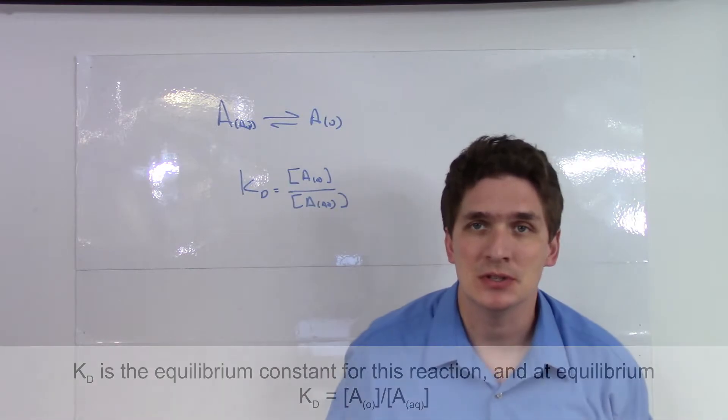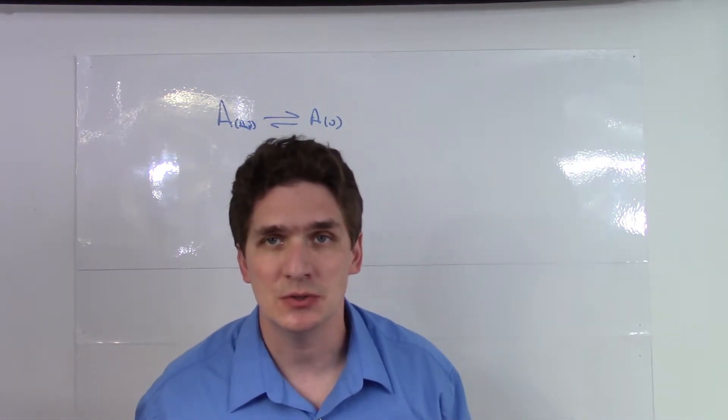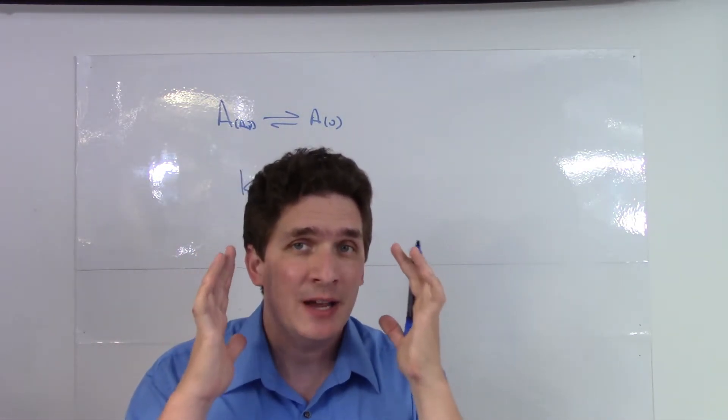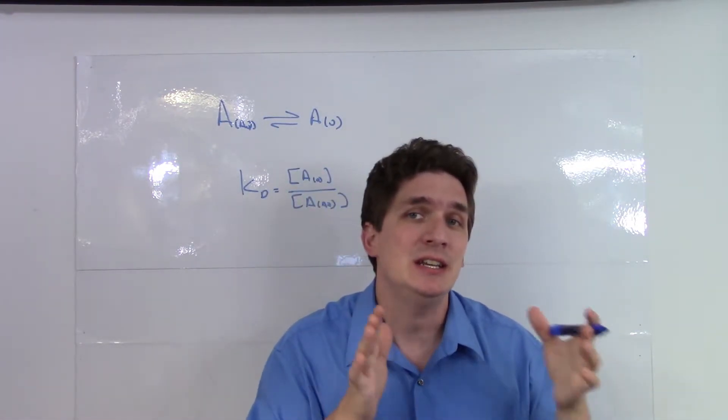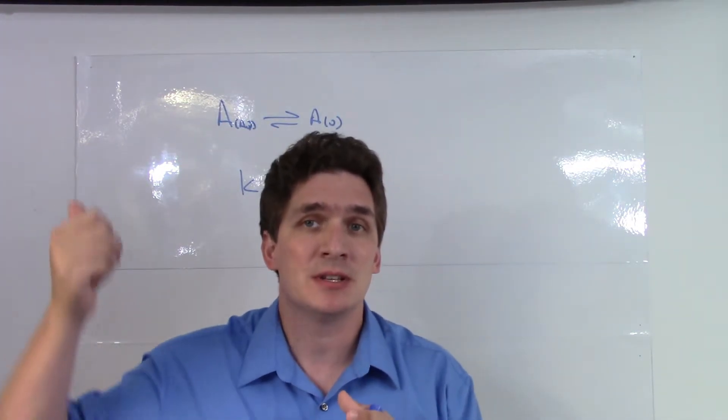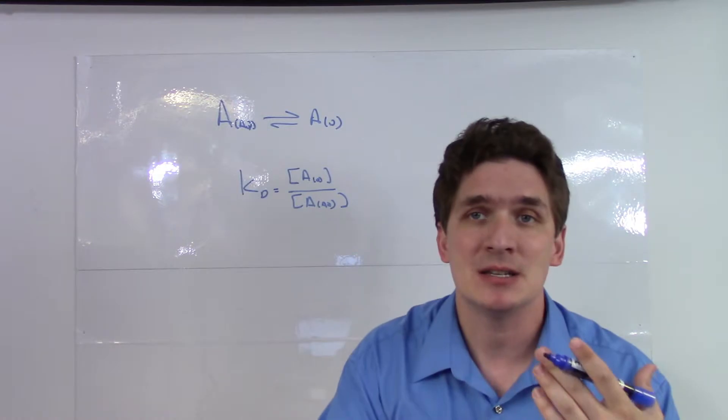It's the ratio of the concentrations between the two. So hopefully automatically this is helping you that KD is actually an equilibrium constant and it describes this reaction. A bouncing between the two phases.